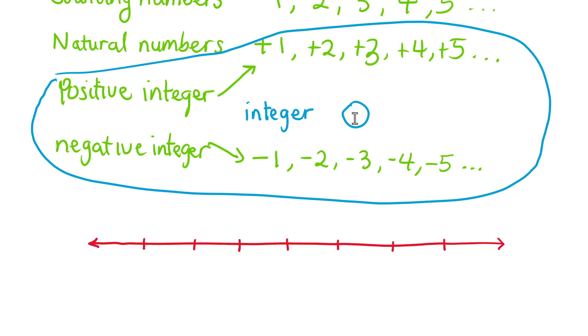We count from zero to the right, which is positive 1, positive 2, positive 3 and so on. From zero to the left, we count negative 1, negative 2, negative 3 and so on.